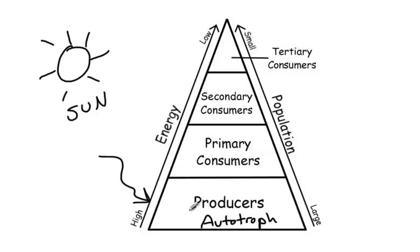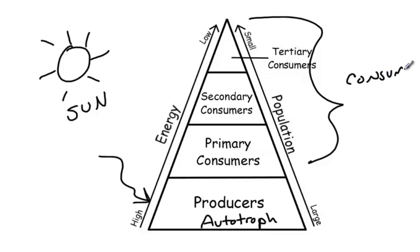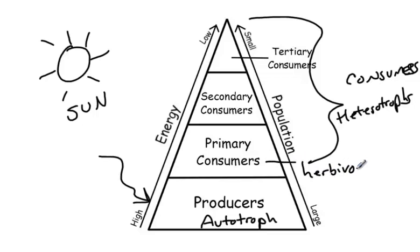Moving up from the producers, we have the consumers. The consumers is anything that's not able to make its own food. Consumers are also known as heterotrophs. These primary consumers eat solely the producers or autotrophs — we've also heard these called herbivores. The secondary consumers are the consumers that are willing to eat the primary consumers or each other. So these are meat eaters; we call these carnivores.